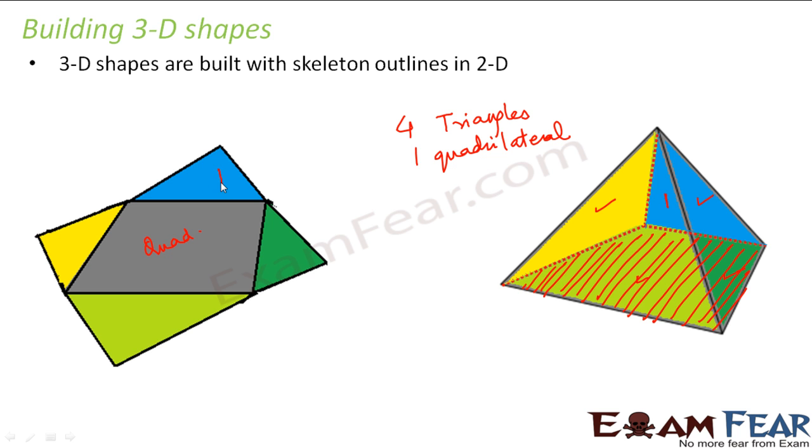Let's say this is triangle one. So this represents triangle one. This is triangle two. This represents two. This is three. This is three. And this is four. So this is four.